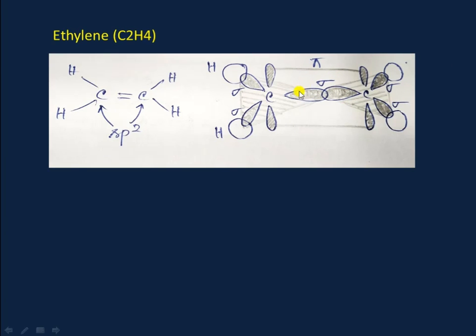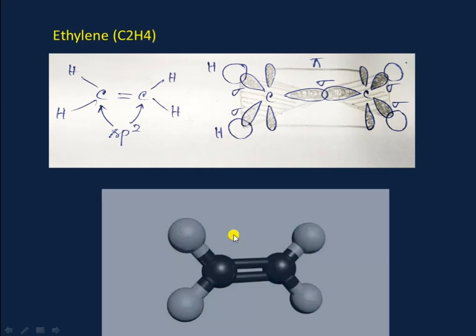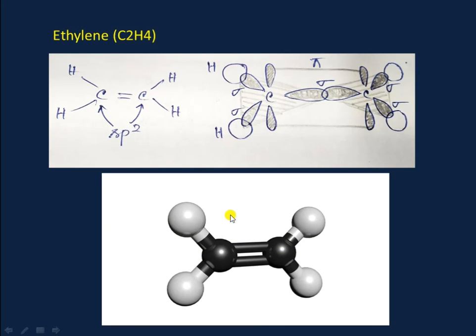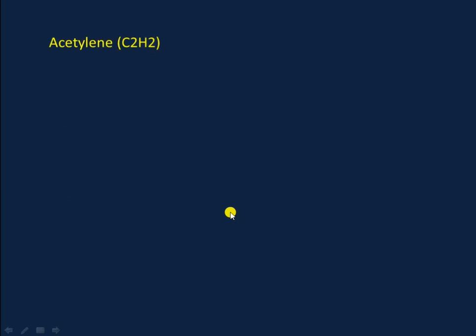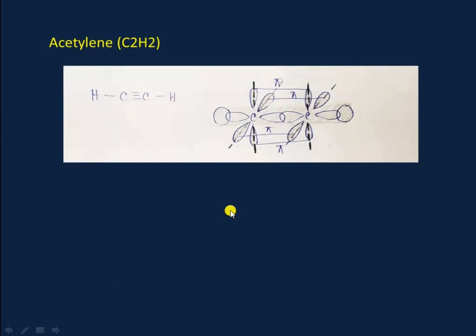The other two sp2 hybridized orbitals are occupied by hydrogen atoms. The pz orbital that lies perpendicular to the trigonal plane overlaps side to side to form the carbon-carbon pi bond. Here you can see the 3D expression of ethylene.